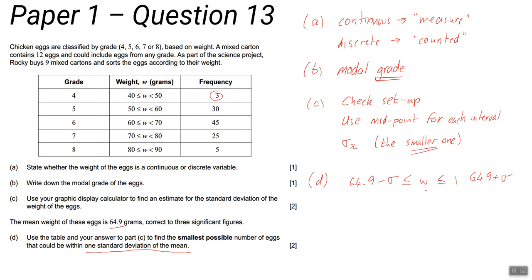Now this isn't the answer, but let's say 64.9 minus Sigma came out to be 48.3. That means they have to be at least 48.3. Well, these three eggs could be in that interval, but it says the smallest possible number.